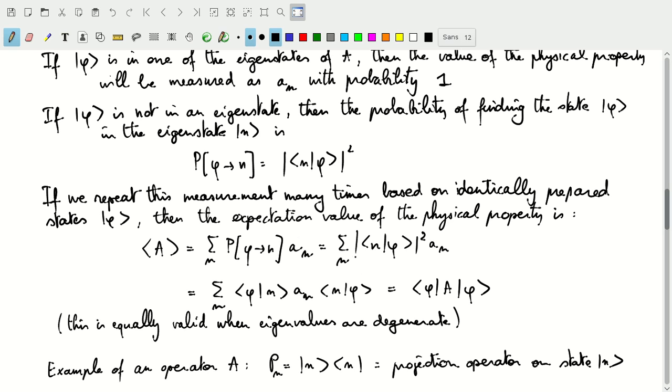And so, that will be your modulus squared of the probability of finding a state phi in eigenstate n multiplied with the eigenvalue. If we then write this modulus squared as a scalar product and a scalar product complex conjugate,